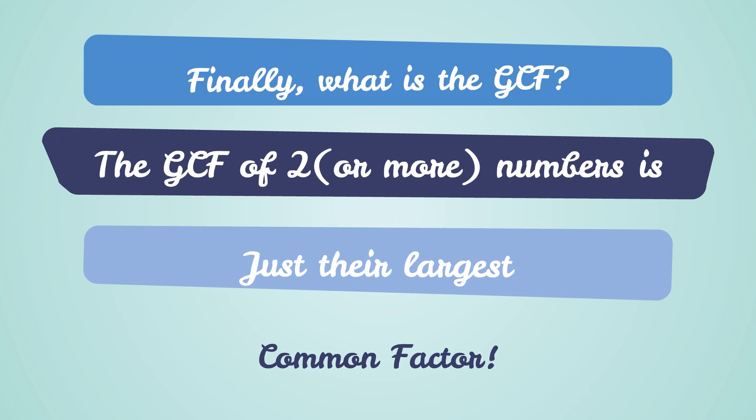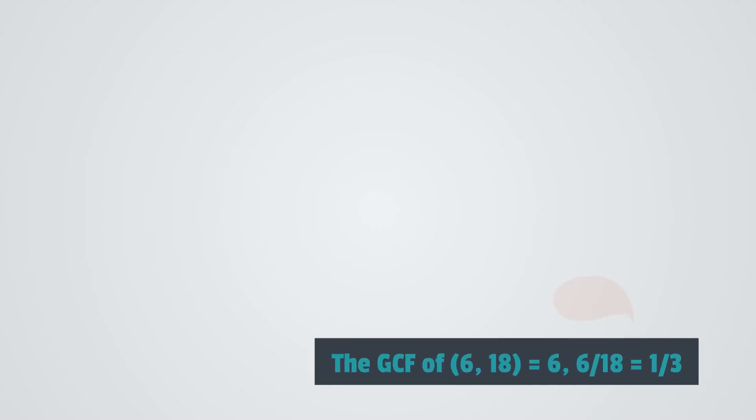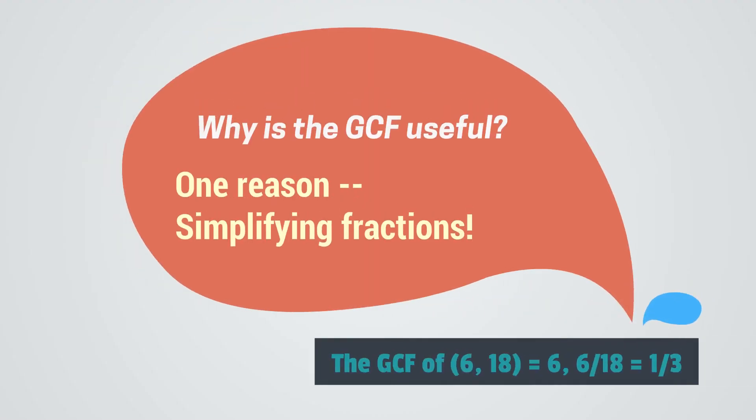Finally, what is the greatest common factor? The greatest common factor of two or more numbers is just their largest common factor. Why is the greatest common factor useful? Well, one reason is that it helps us simplify fractions. For example, the GCF of 6 and 18 is equal to 6. Now if we have the fraction 6 over 18, we can divide both the numerator and the denominator by 6 — since that's their GCF — to get an equivalent fraction, 1 third.